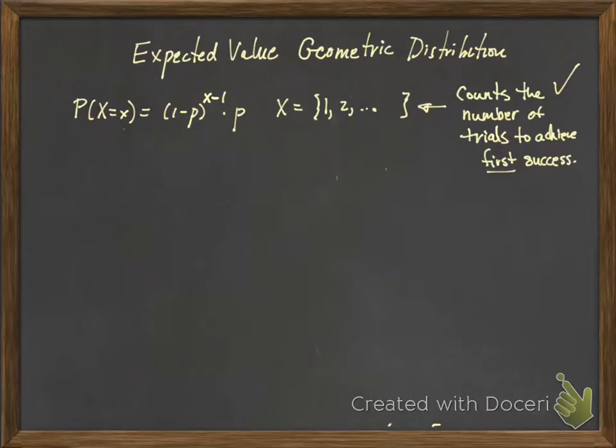Okay, let's attempt to find the expected value of the geometric distribution again. So first, recall the story that you are performing independent trials, each with two outcomes, the same probability of success on each trial, and you're going to perform those trials until you achieve the first success.